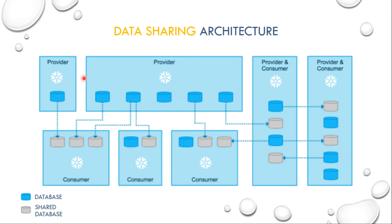Let's talk about the flow. As we have discussed, a provider can share their data to multiple consumer accounts and a consumer can consume the data from multiple provider accounts. Talking about the first provider, it is sharing the data to this consumer, and this consumer has consumed this provider's database to a database on their consumer account.